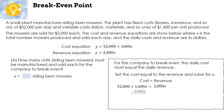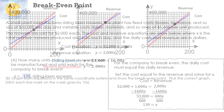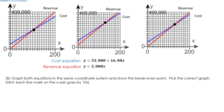Subtract $1,600x from both sides, then divide by $400 to get x by itself. The answer is 130 riding lawnmowers. Let's look at the two graphs — the cost equation is in blue and the revenue equation is in red. Graph both equations in the same coordinate system and show the break even point.